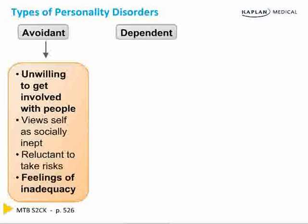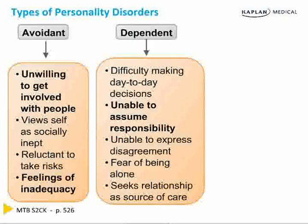Dependent personality disorder: these people have difficulty making day-to-day decisions, are unable to assume responsibility, and unable to express disagreement — they'll agree with whatever you say. They have a fear of being alone and seek relationships as a source of care. Early on they're dependent on parents or siblings, and later on dependent on their spouses or significant others to do everything for them.